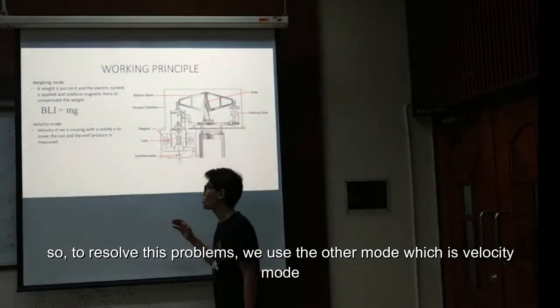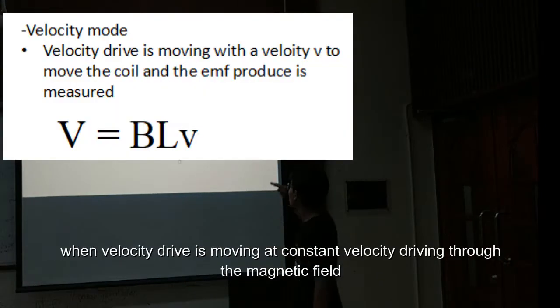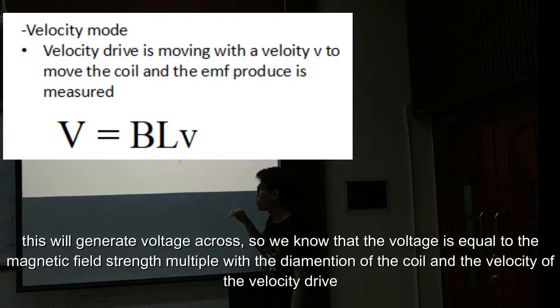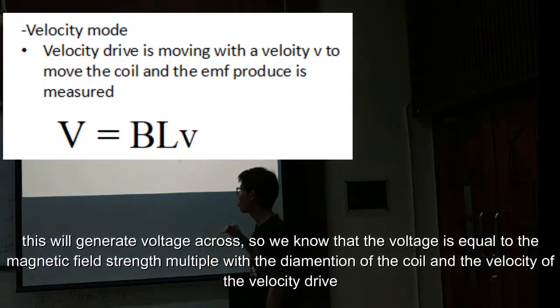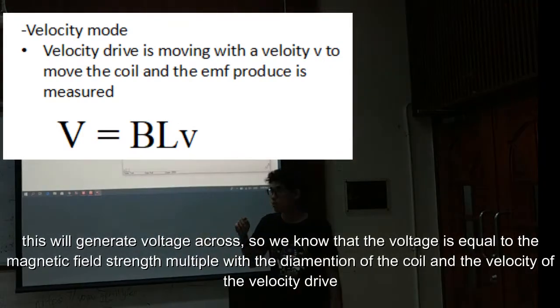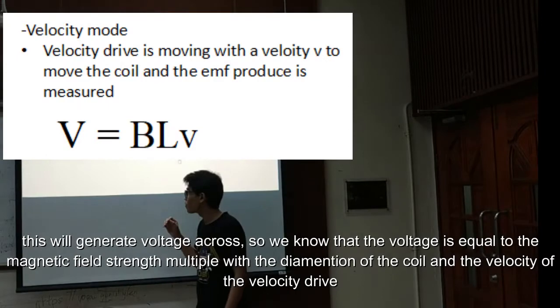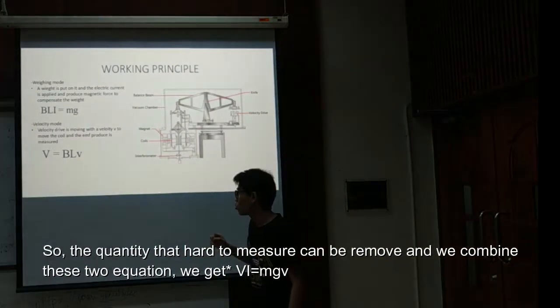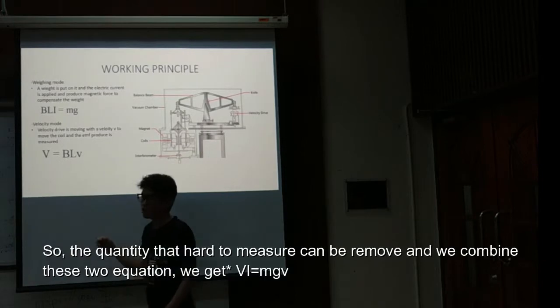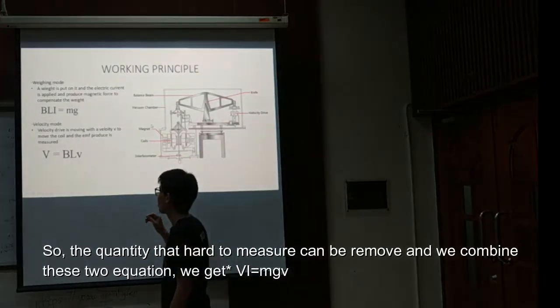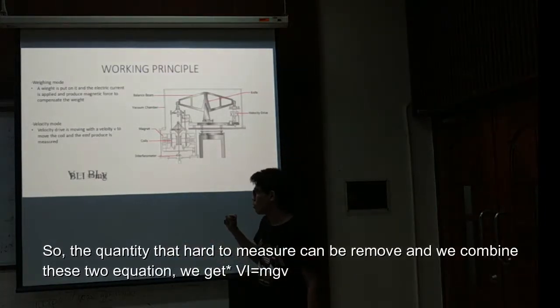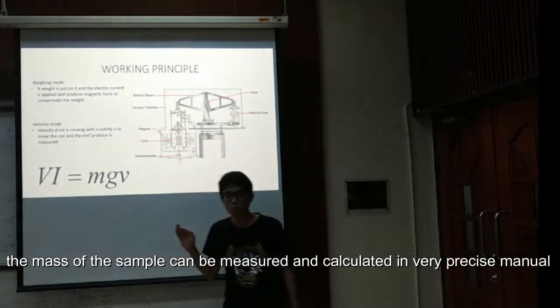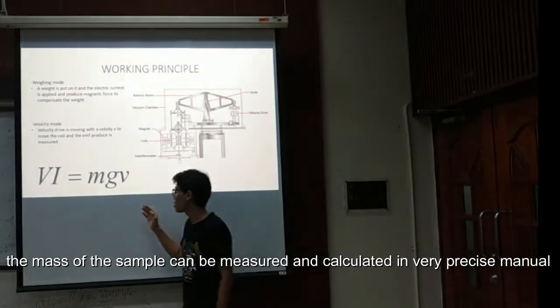To resolve this problem, this limitation, we use another mode called velocity mode. When the velocity drive is moving at a constant velocity, driving the coil through the magnetic field, the coil generates a voltage. We know that the voltage is equal to the magnetic field strength multiplied by the effective length of the coil, multiplied by the velocity of the velocity drive. The quantities that are hard to measure can be removed when we combine these two equations. We know that VI is equal to mgv.